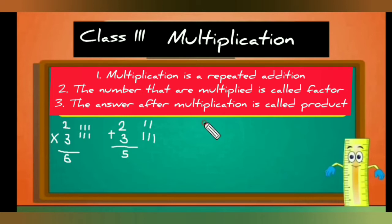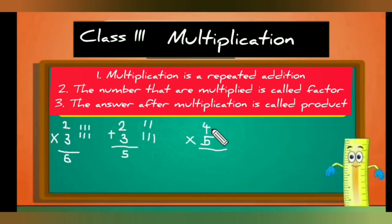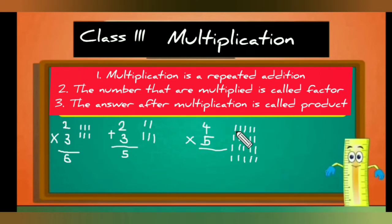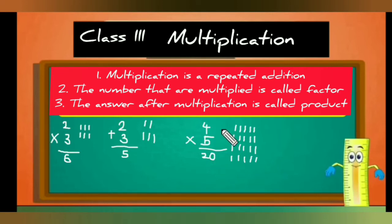Now let's see another example: four multiplied by five. This means four times five, so we draw five lines four times. Count the lines: 1, 2, 3, 4, 5, 6, 7, 8, 9, 10, 11, 12, 13, 14, 15, 16, 17, 18, 19, 20 — so the answer is 20.